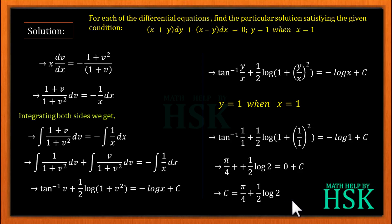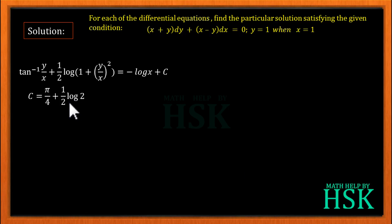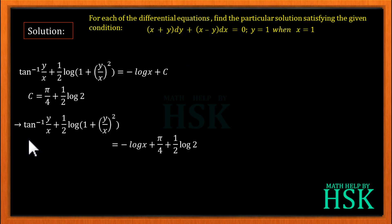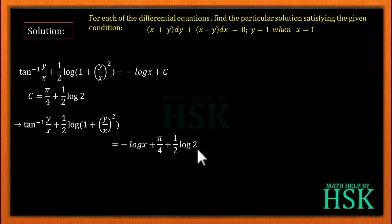Substituting this value of C into the general solution gives the particular solution: tan⁻¹(y/x) + ½ log(1 + (y/x)²) = -log x + π/4 + ½ log 2.